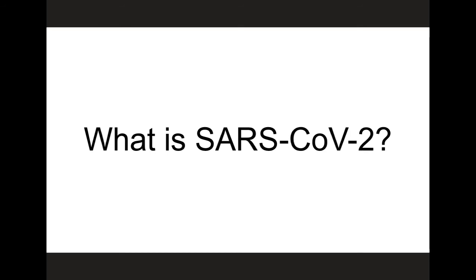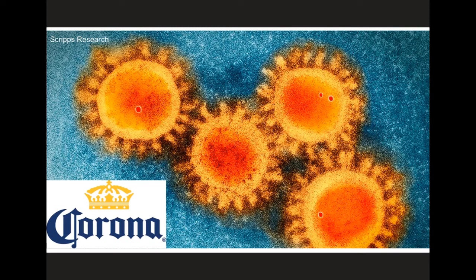I want to start off today with just a little bit of background information about the virus that causes the disease COVID-19, and this virus is called SARS-CoV-2. Here I'm showing an image of four SARS-CoV-2 particles generated using an electron microscope. The virus particles are highlighted in orange, and the background is shown in blue, but these are really just artificial colors. In three dimensions, these particles are roughly spherical in shape, and you can see this crown of proteins protruding from the surfaces. These proteins are actually the reason this group of viruses were called coronaviruses, as corona in Latin means crown or garland.